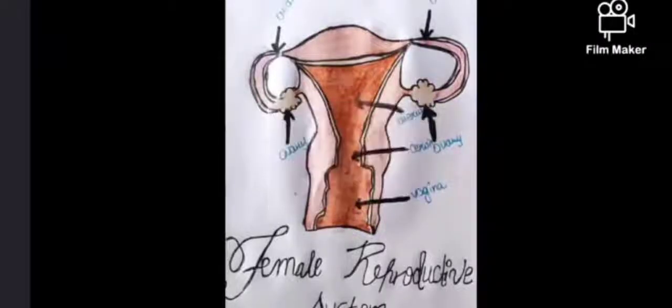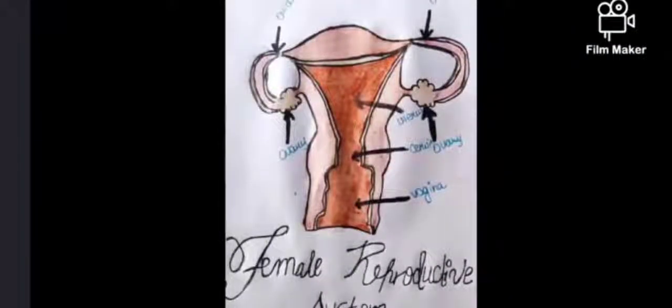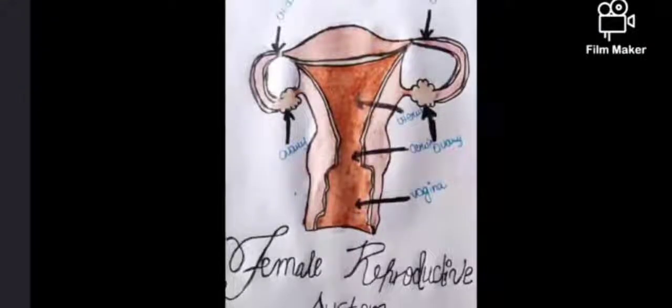The uterus is an inverted pear-shaped structure, broad at the upper end and narrow at the lower end. The upper end is called the body of the uterus and the lower end is called the cervix.